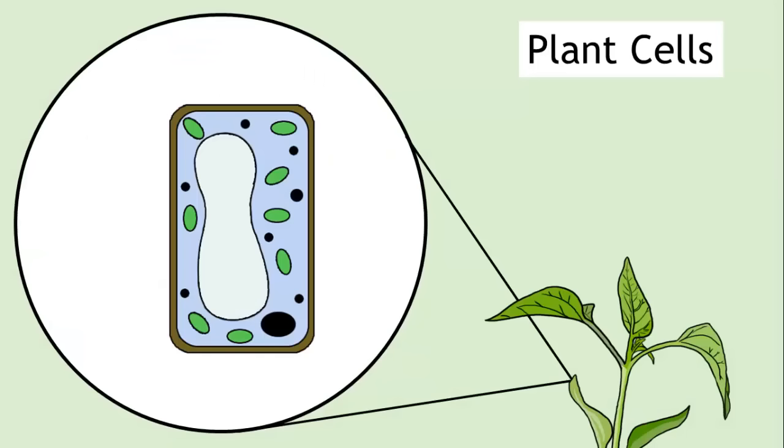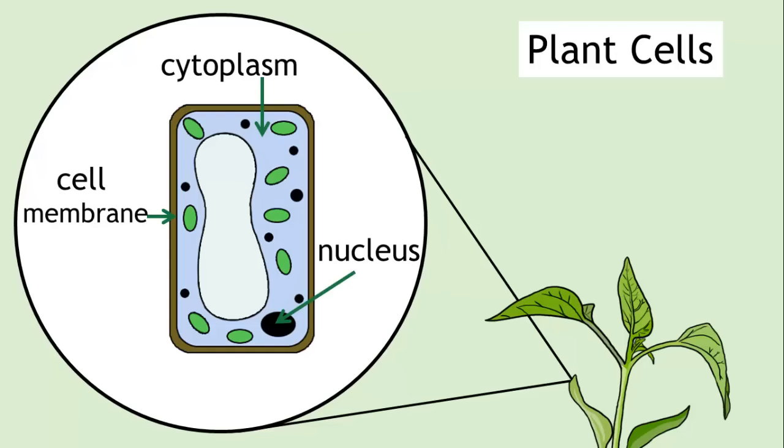Plant cells. Plant cells contain the structures that animal cells contain that we've just discussed—the nucleus, the cytoplasm, and the cell membrane—but they also include lots of extra structures.